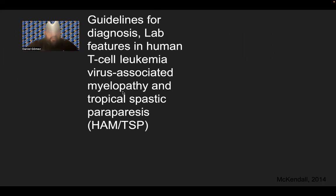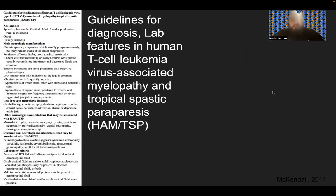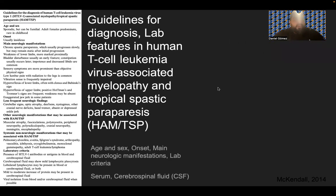Looking at the guidelines, diagnosis, and lab features in human T-cell leukemia virus-associated myelopathy and tropical spastic paraparesis, or HAM-TSP: the age and sex can be familial, with adult females predominating, and it's rare that it occurs in childhood. The onset is usually insidious — slow but harmful. Main neurological manifestations include chronic spastic paraparesis, which progresses slowly but remains static after initial progression. There can also be weakness of lower limbs, and bladder disturbance is usually an early feature.